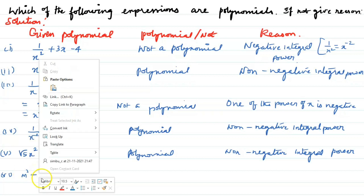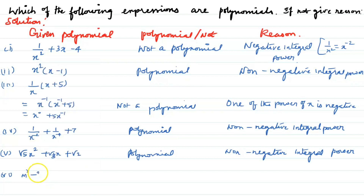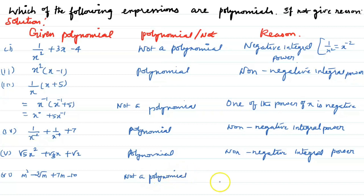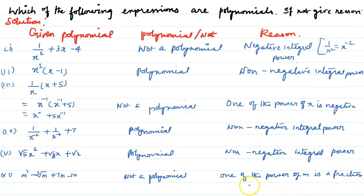Sixth question: m² - ∛m + 7m - 10. This is not a polynomial because one of the powers of m is a fraction — specifically 1/3. The term ∛m is m to the power of 1/3, so this is not a polynomial.